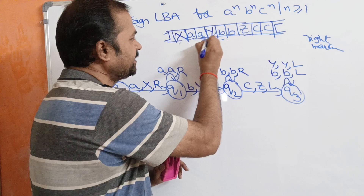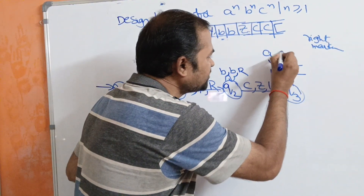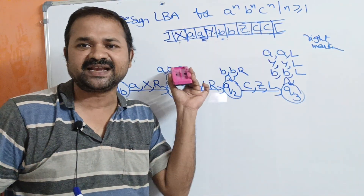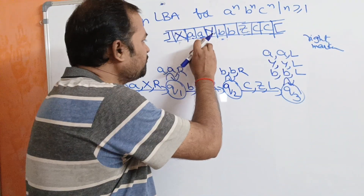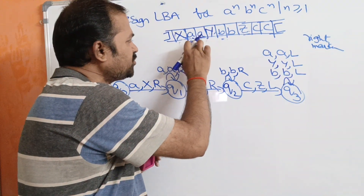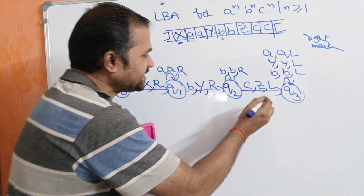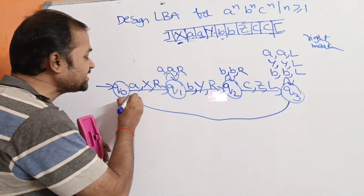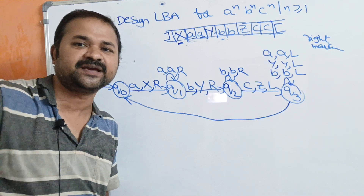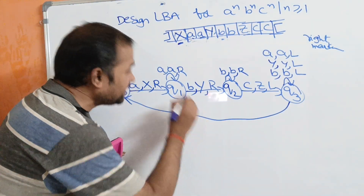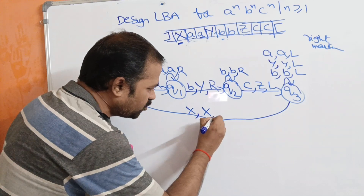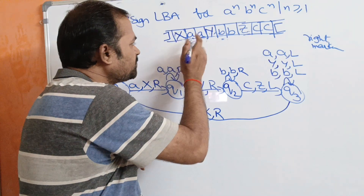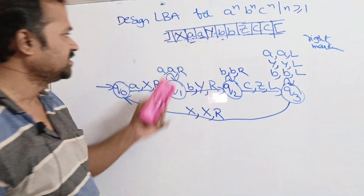We have to move the head towards the left until we get X. When we read X on Q3, it specifies that one iteration is over — one A and the corresponding B and C is complete. Keep X the same but move the head towards the right for the second iteration. Now we are back at Q0 state. We are now at the second A, so A on Q0 means it will be replaced by X and move the head towards the right.